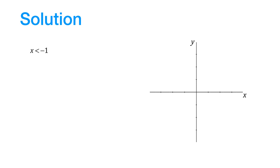Consider the case that x is less than minus 1. Over here, the function is defined as 2x minus 1, which is a straight line of slope equal to 2 and y-intercept equal to minus 1, so we can sketch it like this.